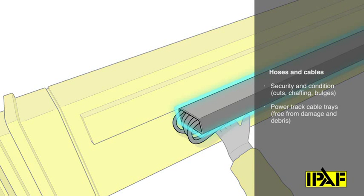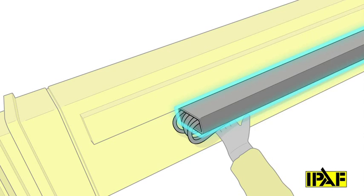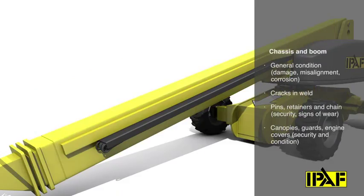Check the power track is securely attached to the boom and without damage to the tracking links and hoses and is free of debris. Check the booms for structural cracks, weld cracks, damage and misalignment.